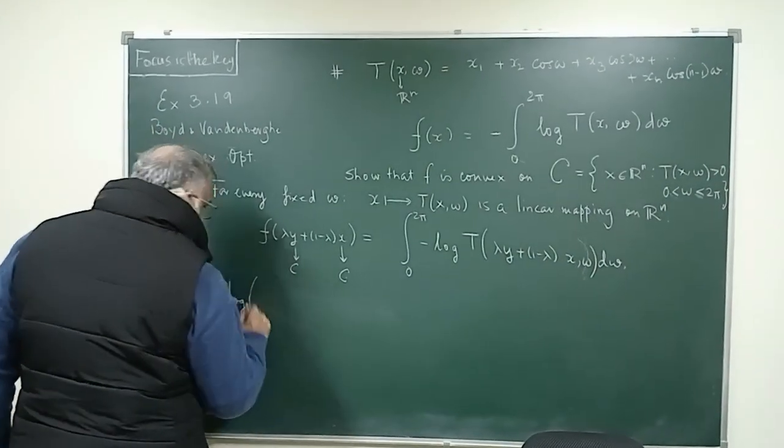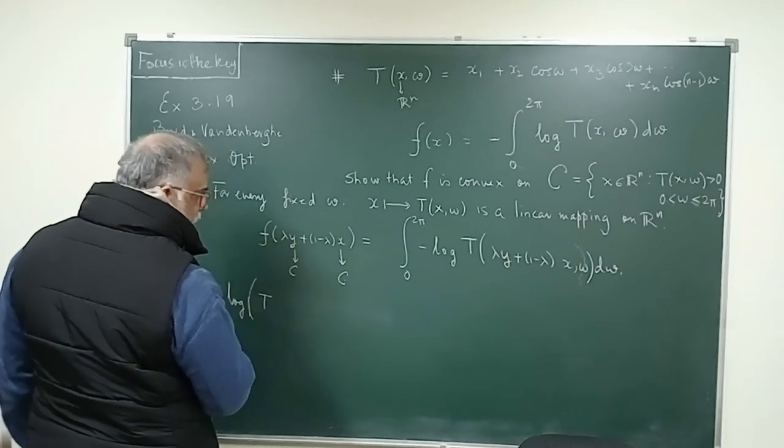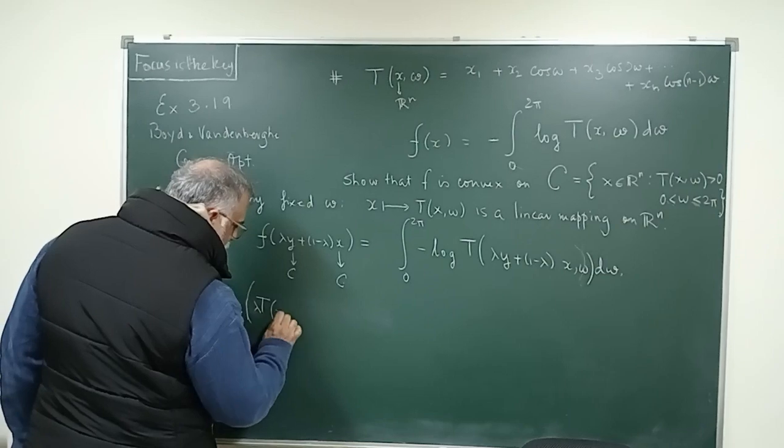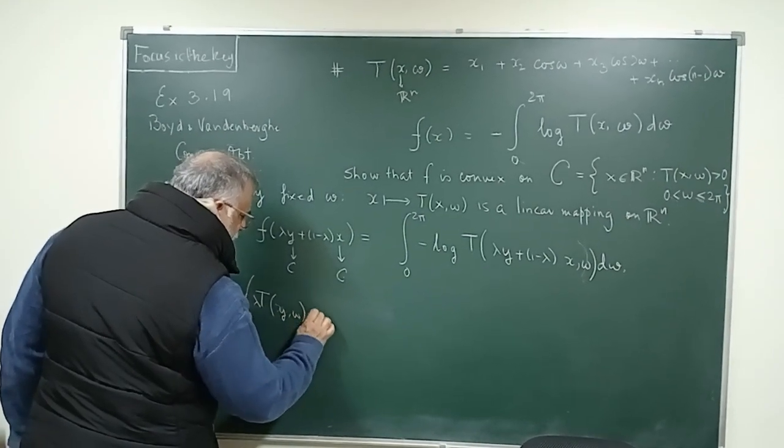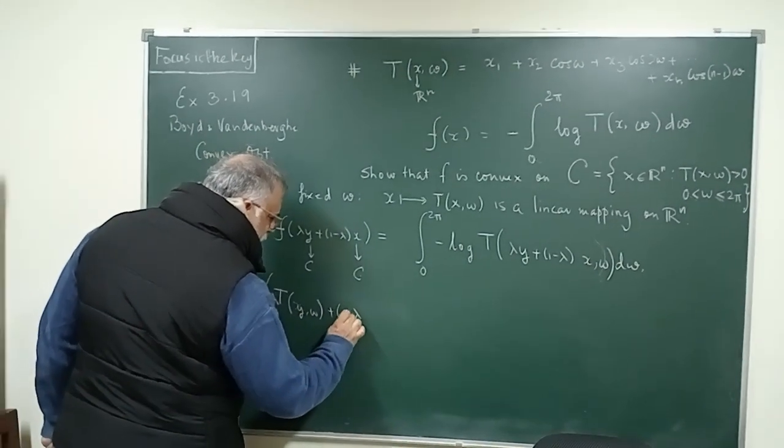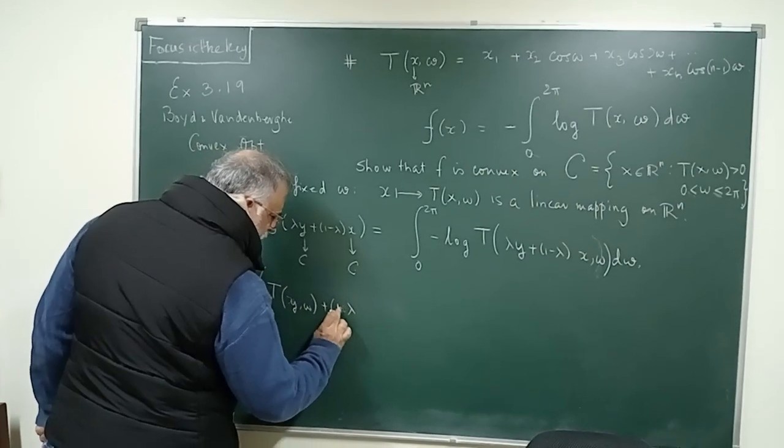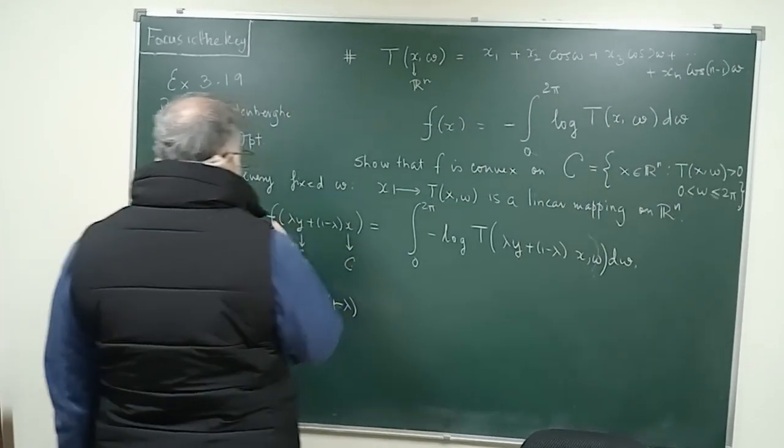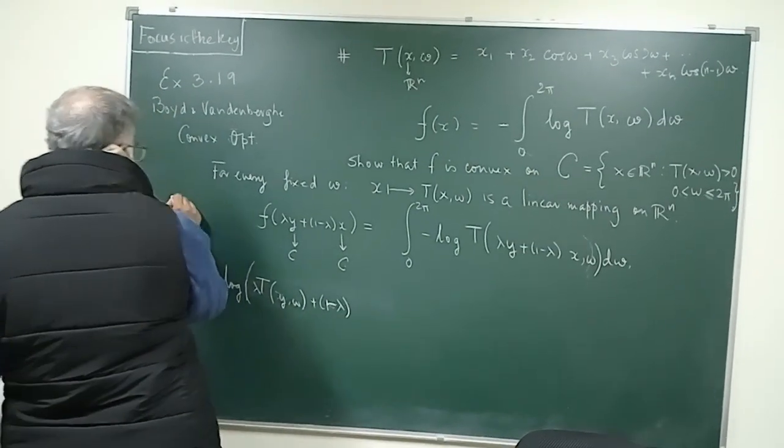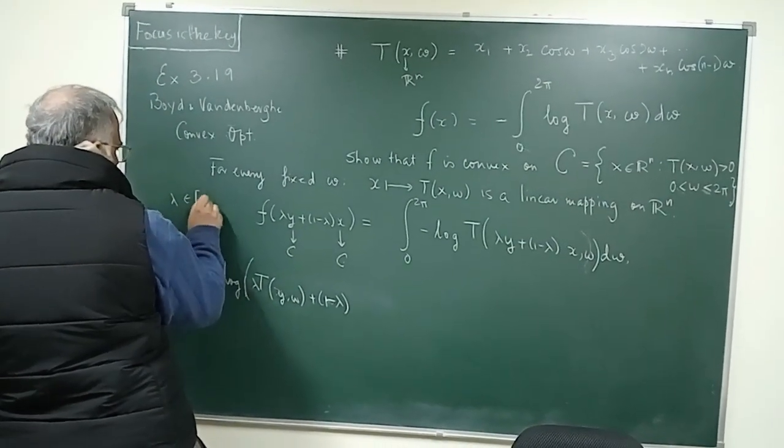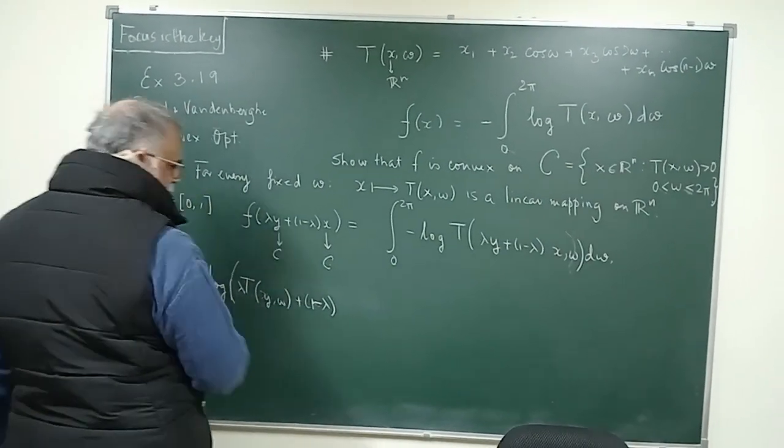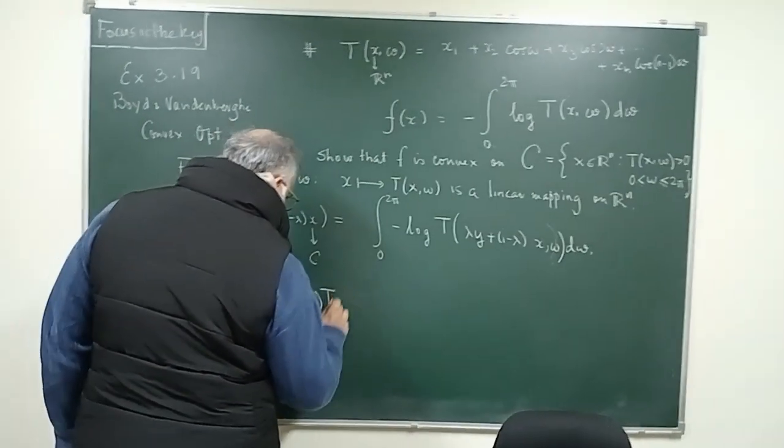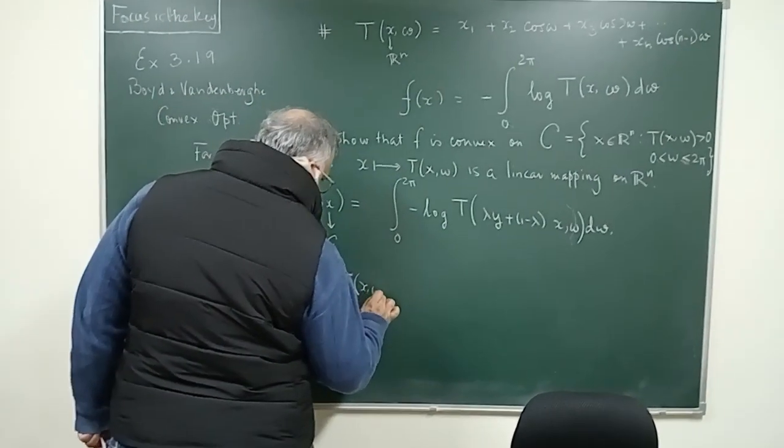Because it is a linear function for a fixed ω, for every fixed ω what you can write is T(λy + (1-λ)x, ω) = λT(y,ω) + (1-λ)T(x,ω). Lambda is a quantity lying between 0 and 1 because this is what we are supposed to do when proving convexity. I am sure anybody that has been coming to my channel would know the definition of a convex function pretty well.